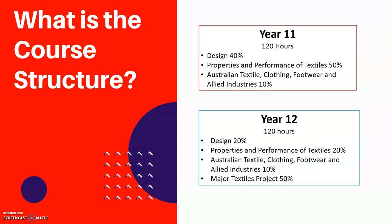So what is in the course structure? In Year 11, it's 120 hours. We start off with design and look at the elements and principles of design. For each element and principle, we actually do a sewing or surface decoration technique to learn how to apply that in a textile item. We then look at properties and performance of textiles — we look at how the fabric is woven, how it is made up, and we do fabric testing such as burning tests, drape tests, etc.